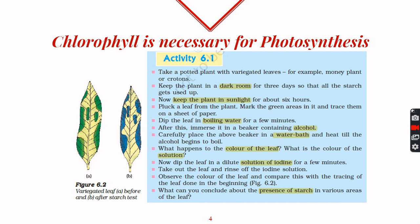Alcohol has dissolved the green chlorophyll inside it. We then perform the starch test by putting the white leaf into a dilute solution of iodine. We find that certain areas of the leaf turn blue-black. Comparing with the traced leaf, only those areas that were earlier green in color have turned blue-black, showing that starch is present only where chlorophyll was present.